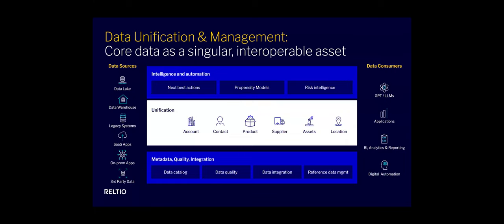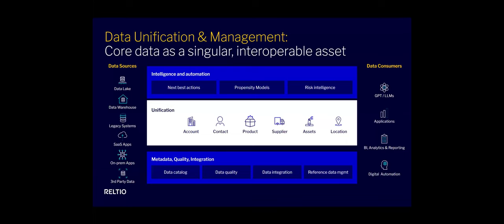To solve this, organizations have started to invest in data unification management platforms. The core of this is being able to take all these different data assets from all these applications, bring them together in one place, and service that trusted, interoperable data wherever it needs to be — whether it's an LLM, an operational application, analytics and reporting, or an automation tool. Provide that trusted core data — products, customers, households — wherever and whenever you need it.